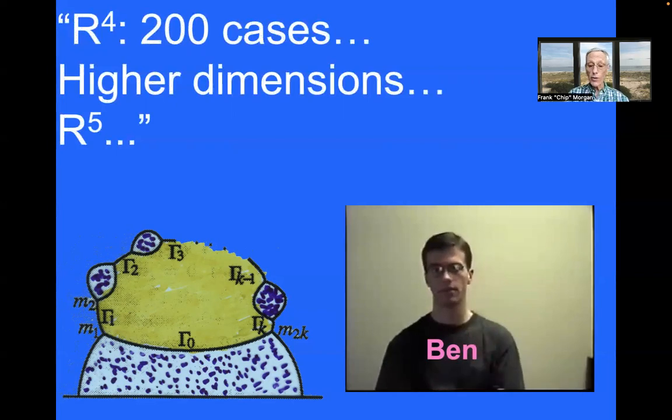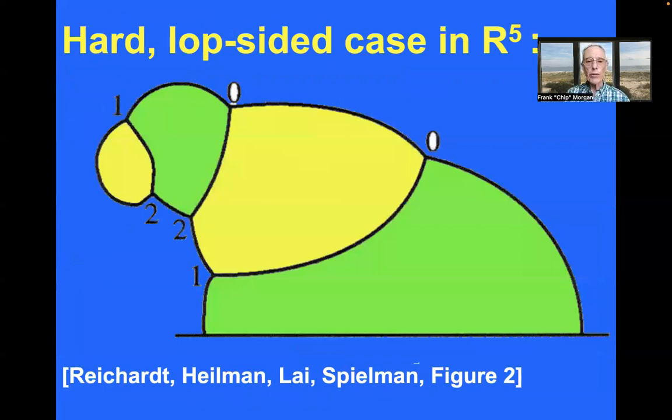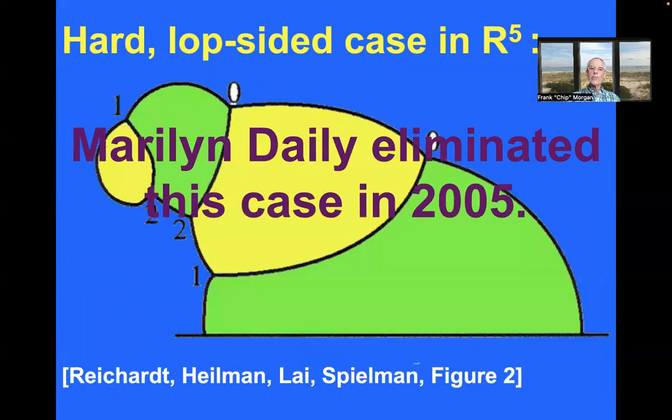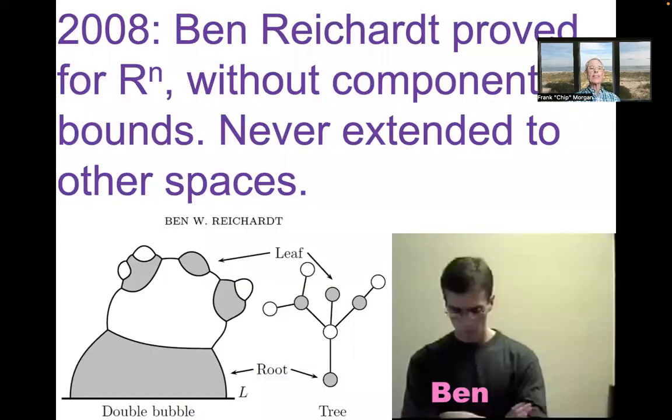Well, as he mentioned there, they got stuck in R5. And there was just there a lopsided bubble that was so lopsided that the methods didn't apply. And so that was, seemed like a dead end for many years. In 2005, a graduate student, Marilyn Daly, managed to eliminate this particular case, but was very disappointed that her method failed to eliminate many other similar cases. And she gave up on that and math, I think, sadly. But Ben stayed with it. And in 2008, had a proof of, in general dimensions, without using any component bounds. So he actually found instabilities for these multi-level tori on tori on tori around the central bubble, no matter how intricate and complicated. It was a real tour de force, which no one's ever extended to other spaces.